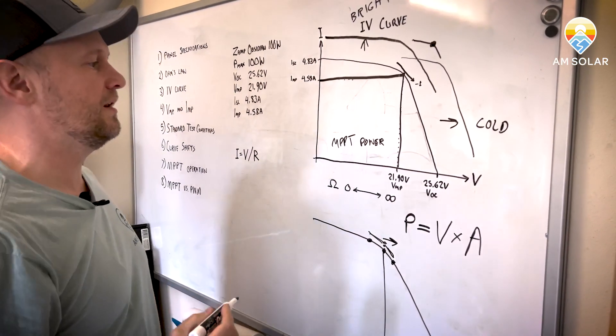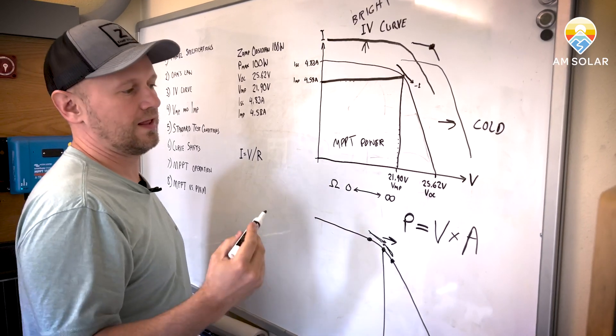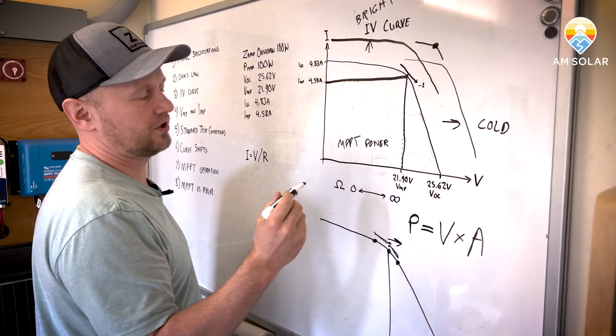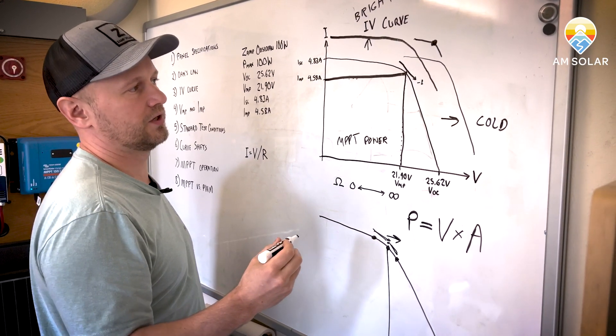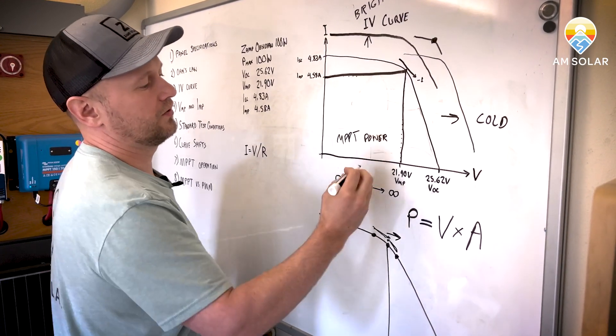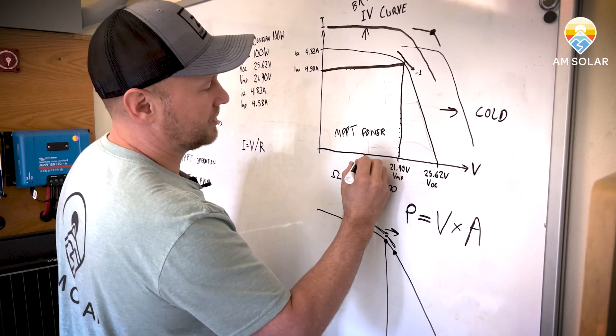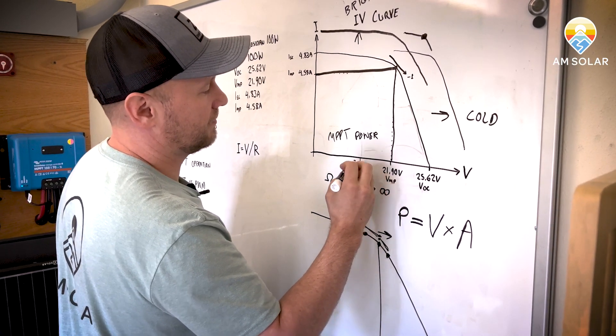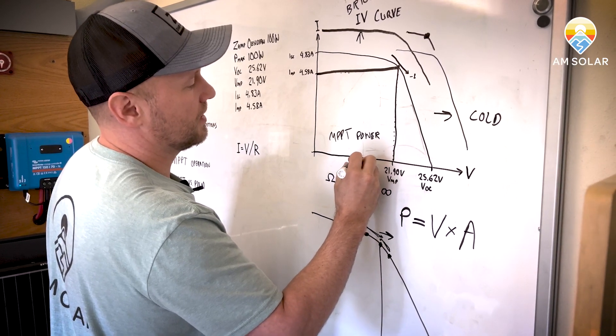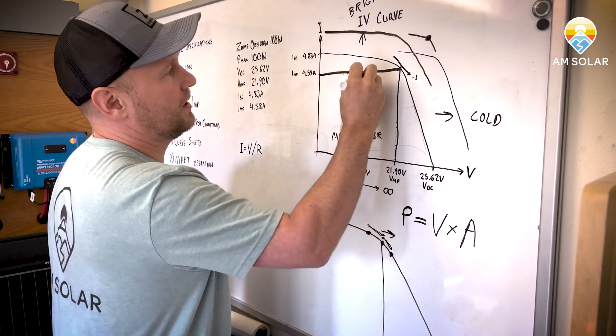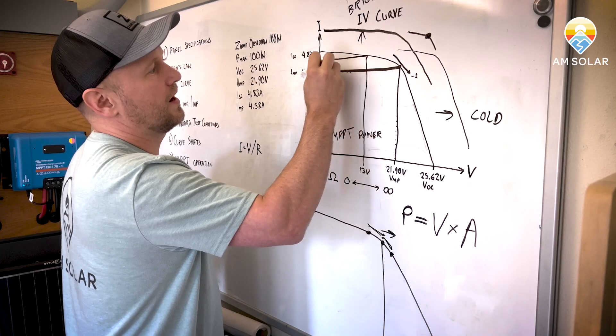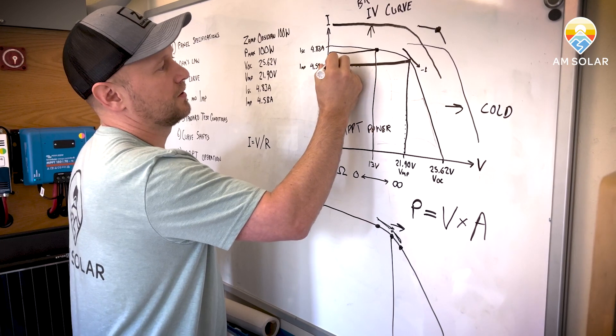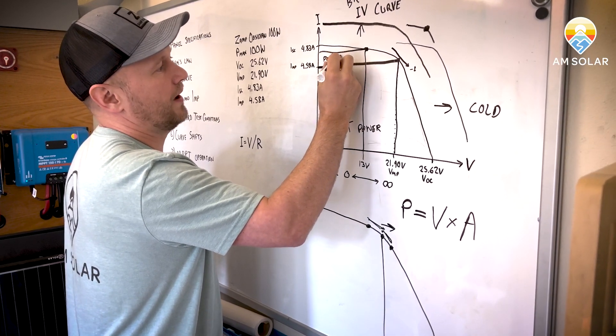If you use the PWM charge controller, they operate a lot differently. They establish a pulse direct connection to a battery. So it's going to operate at the voltage of the battery. And maybe that's 13 volts. So you have a line right here to there. So that is your new operating point with a PWM charge controller. So PWM power.